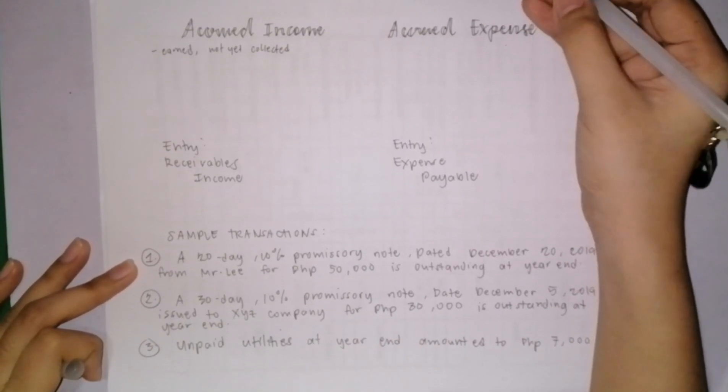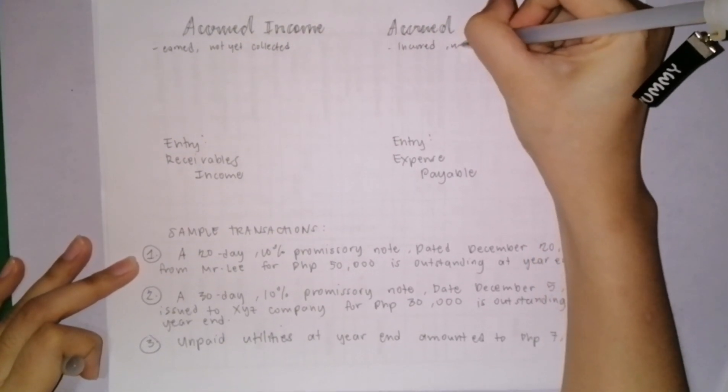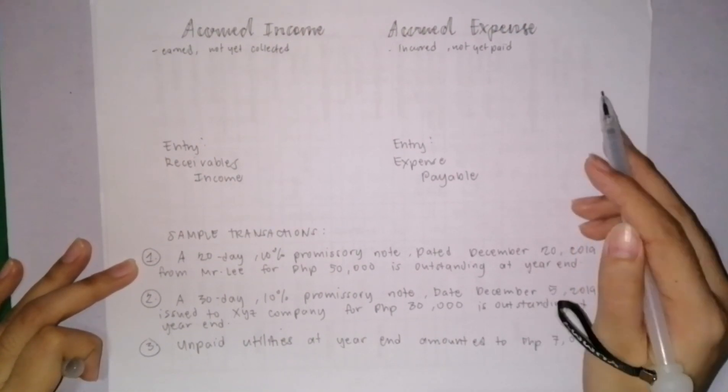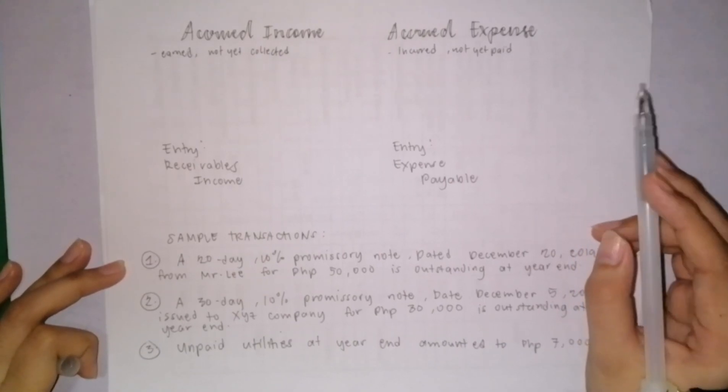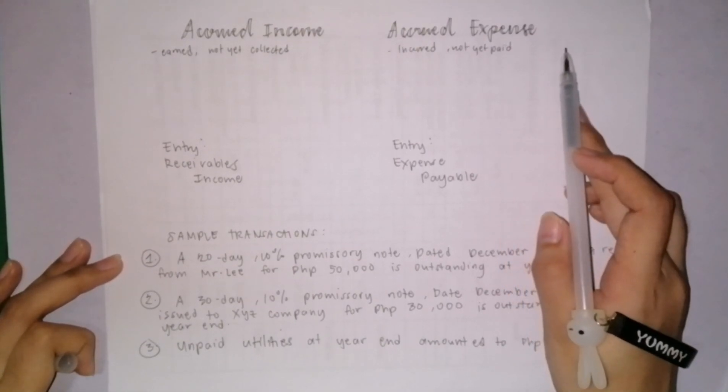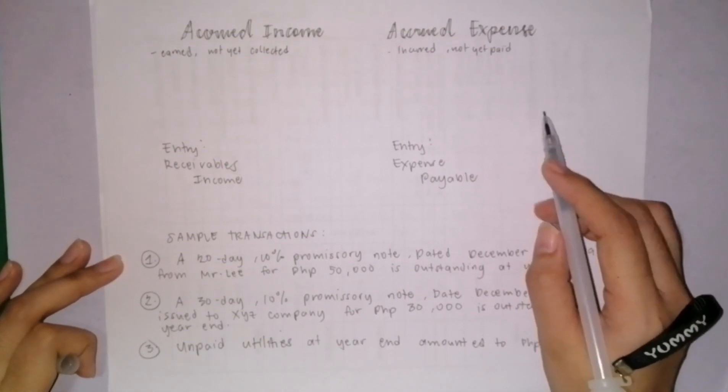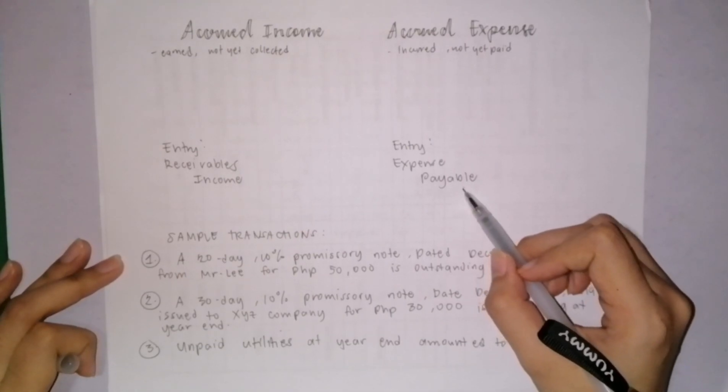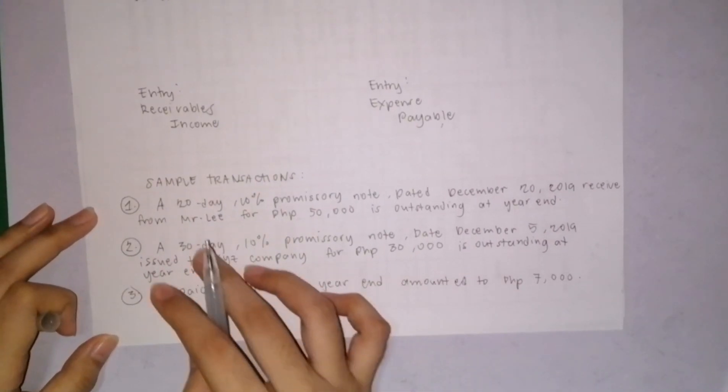Next is accrued expense. These are already incurred but not yet paid. When we say already incurred, you already used it but haven't paid for it yet, so you have an obligation to pay. One of the best examples here is utilities, like electricity bills and water bills. You already availed the service but haven't paid yet. Accrual basis of accounting is also used. You record an expense when incurred regardless of when paid. The pro forma entry to record accrued expense is we debit an expense account and credit a payable account because we have the obligation to pay.